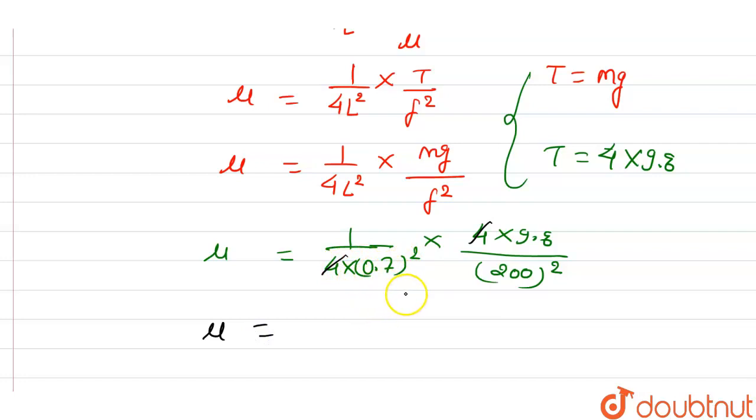So 0.049 will be there, and then we will square it. Then we will divide it by 9.8. So we will get 5 times 10 to the power minus 4 kg per meter. So we will find this value of linear mass density.